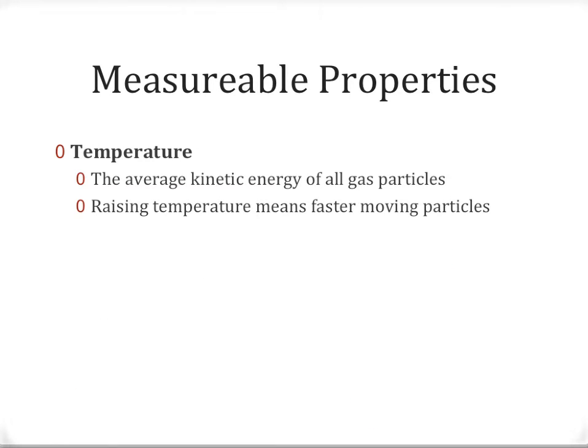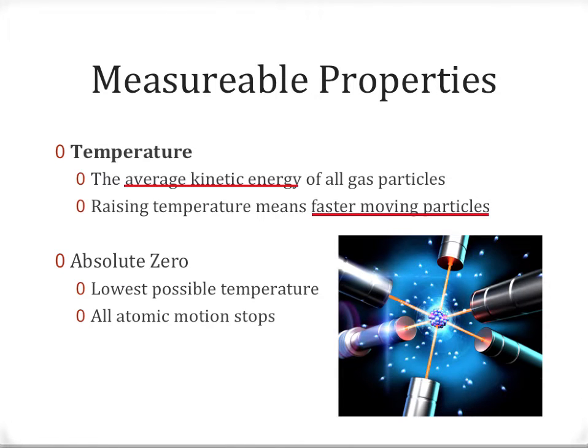The last of our measurable properties is the property of temperature. Temperature, as we've talked about a couple times in this unit, is a measure of the average kinetic energy of all the particles in your gas sample. And generally speaking, raising temperature generally means we have faster moving particles. That doesn't mean every single particle is moving faster, but on average, they will be going more quickly. An interesting characteristic of temperature that's going to come into play in a moment is the idea of absolute zero. This is a concept that wasn't originally obvious to scientists, but was discovered eventually that there is a lowest possible temperature out there in the world. If temperature is simply average kinetic energy, there has to come a point in time where there is no kinetic energy left, basically a point in time where all atomic motion has stopped.